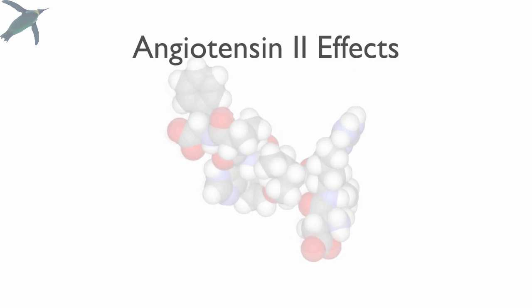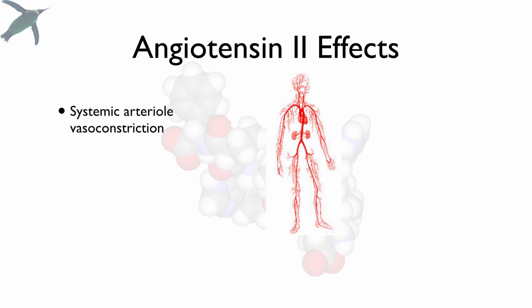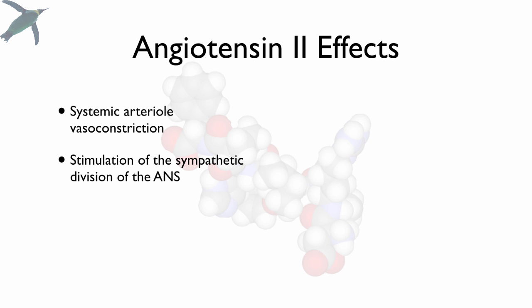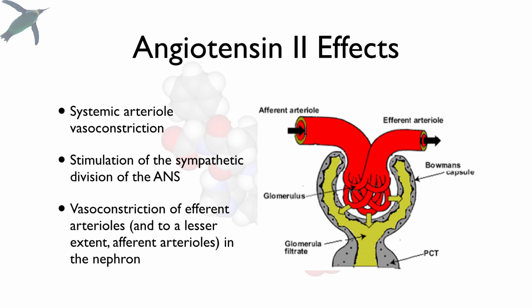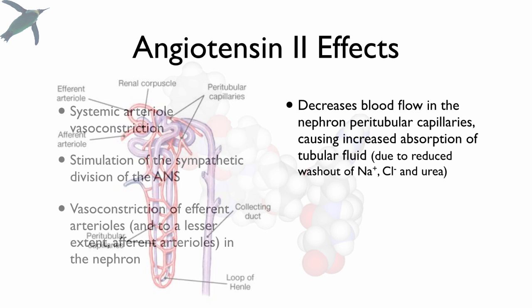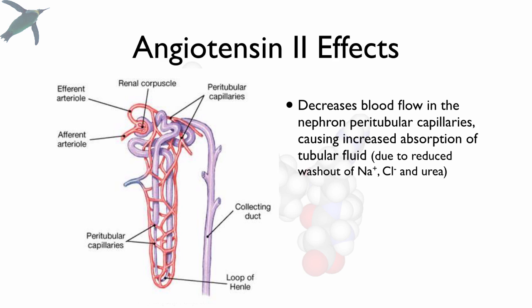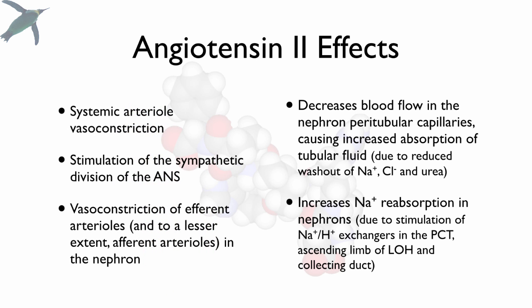Angiotensin-2 causes systemic vasoconstriction of arterioles, which in and of itself increases blood pressure. We're going to get stimulation of the sympathetic division, so you get an increase in both heart rate and stroke volume, which will also increase blood pressure. You're going to get vasoconstriction of the efferent and, to a lesser extent, afferent arterioles in the nephron, keeping pressure in the glomerulus high. There will be decreased blood flow to the nephron peritubular capillary — the vasa recta — causing reduced washout of ions, primarily sodium, chlorine, and urea, and increased sodium reabsorption in nephrons overall due to stimulation of sodium-proton exchangers.